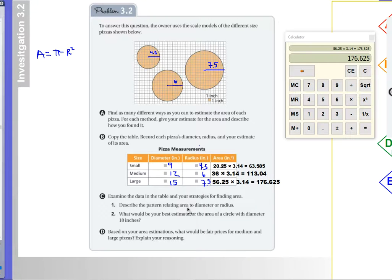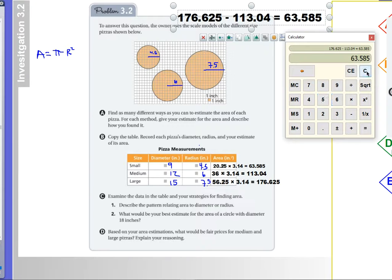All right, describe a pattern relating the area, diameter, and radius. Well, the diameter went by 3. This went up by 1.5. And this, did this go up by the same factor every time? Well, let's subtract. So the large area minus 113.04 equals, so that's a difference of 68.585. All right, so 113 point, oh my goodness, look. So the area is increasing.